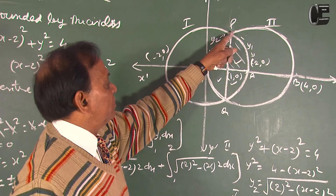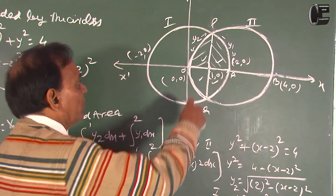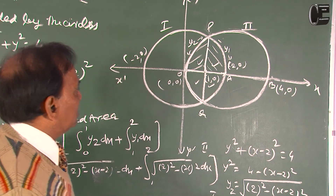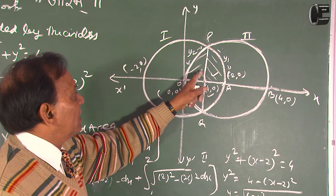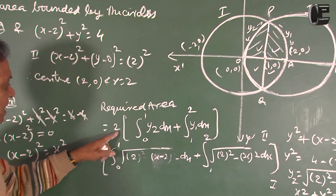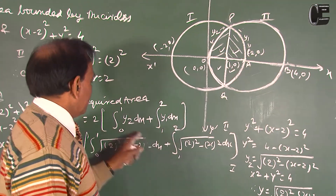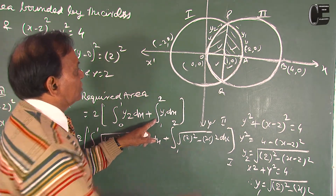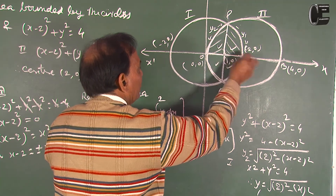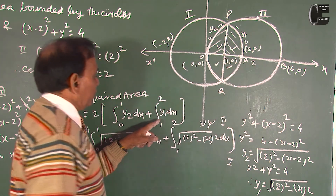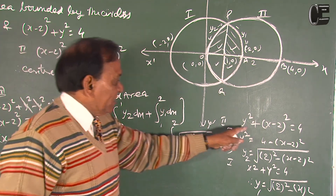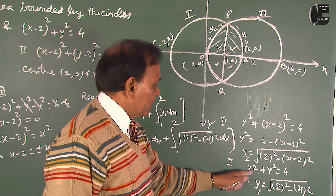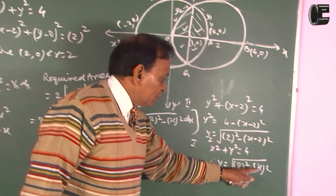There are 2 points of intersection — P and Q. We have to find this area, which is this area plus this area. By symmetry this equals this, so the area will be doubled. Therefore, required area equals 2 times the area. For the first part, we take the limit 0 to 1 and value of y₂ for the second circle, plus y₁ for the first circle with limit 1 to 2.